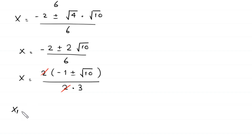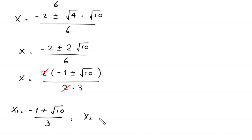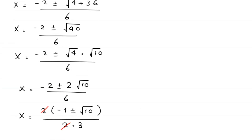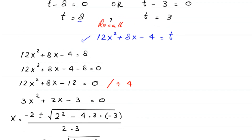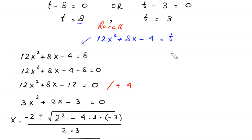So x₁ = (negative 1 + √10) / 3 and x₂ = (negative 1 - √10) / 3. Now we solve the second case when t = 3, which gives 12x² + 8x - 4 = 3.